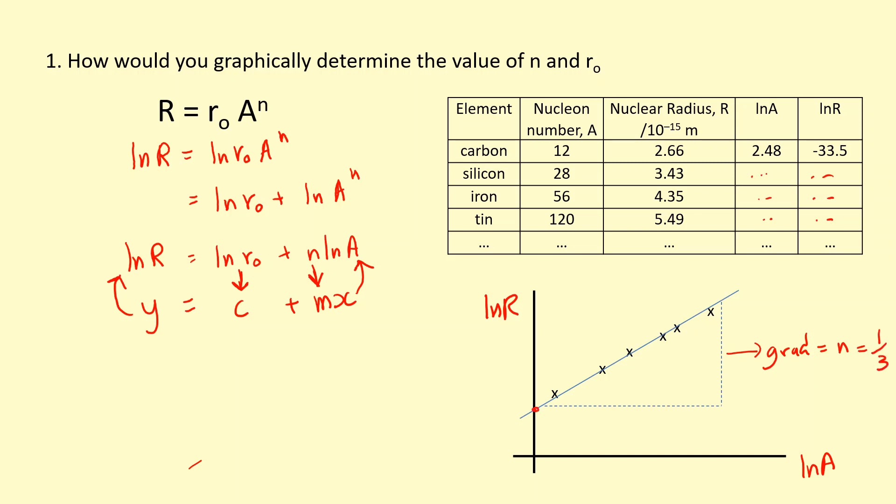The intercept here is going to equal ln of the constant R₀. So to figure out the constant, I'll have to do e to the power of the y-intercept to get R₀. And it turns out R₀ is roughly around a femtometer, in the order of femtometers.